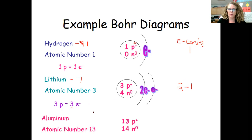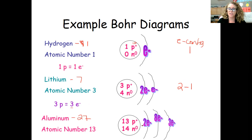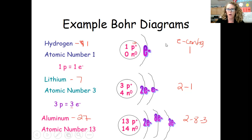Now aluminum: 13 protons + 14 neutrons = mass of 27. I have 13 electrons to place. In level one: 2 electrons. In level two: 8 electrons. In level three: the last 3 electrons. So the electron configuration is 2-8-3. This wraps up our Bohr models — we're at the bottom of page 60. In the next video I will do the last set of notes where we talk about excited state and ground state and how light is produced.